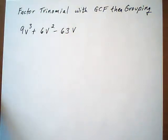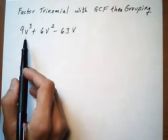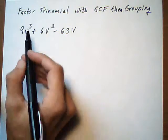Factor the trinomial by doing a GCF first and then factor it by grouping. So the first thing you always want to do when you're factoring is look to see if there's a GCF.